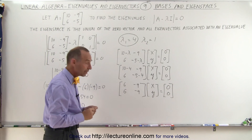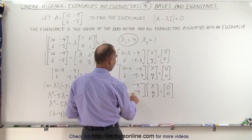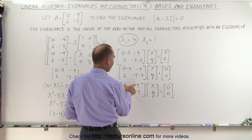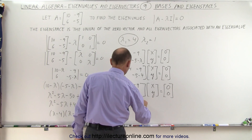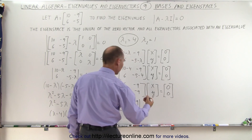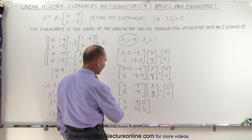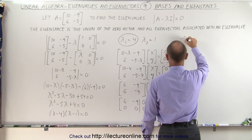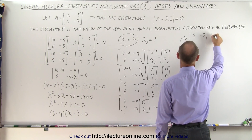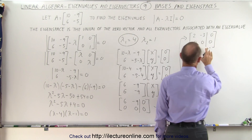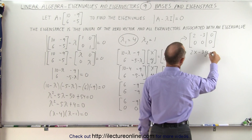Whenever you have something like this where the two rows are exactly the same, we can multiply one row by the negative of the other and add them, turning the bottom row into zeros. So this can be reduced to the matrix 6, −9, 0, 0. Writing this as an augmented matrix and then dividing the top row by 3, we get 2, −3, 0, 0. The solution for this matrix then becomes 2x − 3y = 0.